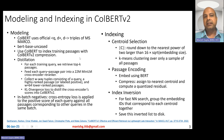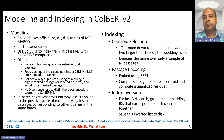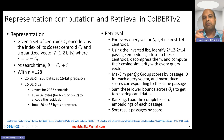That's how training for ColBERT V2 is done. For indexing, embeddings are quantized using centroids. Each embedding vector V is represented as a combination of a cluster centroid and a quantized residual vector.